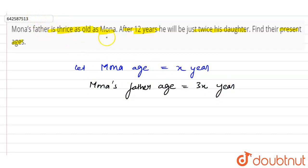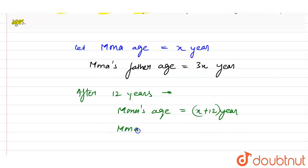Now the second condition is after 12 years. So after 12 years, Mona's age equals x plus 12 years, and Mona's father age equals 3x plus 12 years.